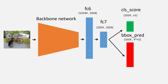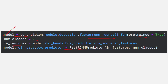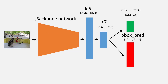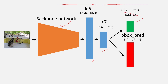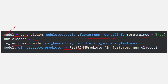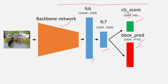When the first line of code runs and downloads the model, the full model is downloaded — this includes the backbone network, maybe VGG or something else. Importantly, there are two fully connected layers: FC6 and FC7. Then there is the classification layer for prediction and the bounding box prediction layer. If you remember the Faster RCNN architecture, one head handles classification and the other predicts bounding boxes. The in_features here is 1024.